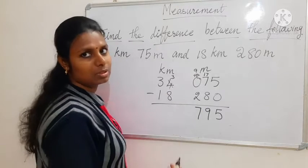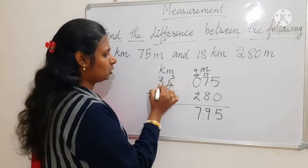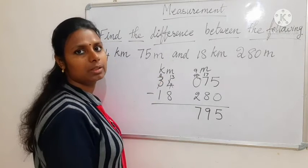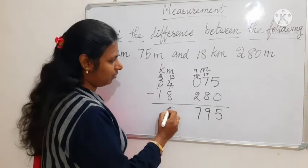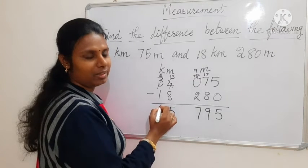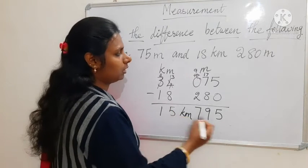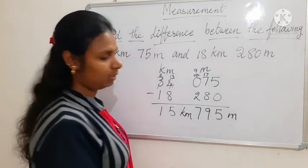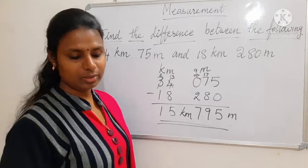3 minus 8 — we cannot subtract, so we have to borrow. It will become 2 here and 13 here. So 13 minus 8 is 5. Then 2 minus 1 is 1. So the answer is 15 km and 795 meters.